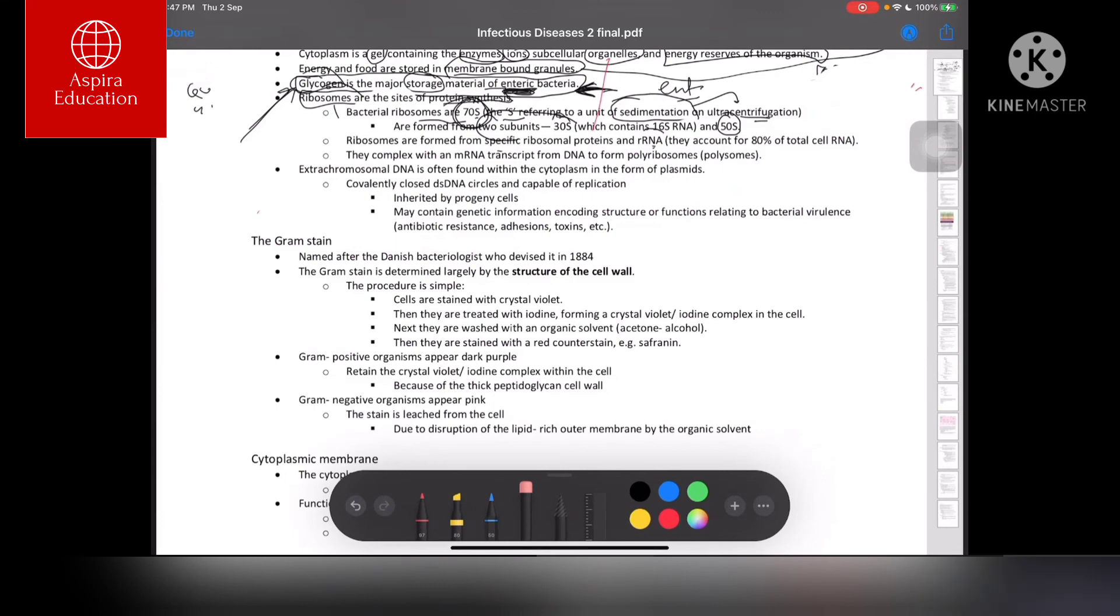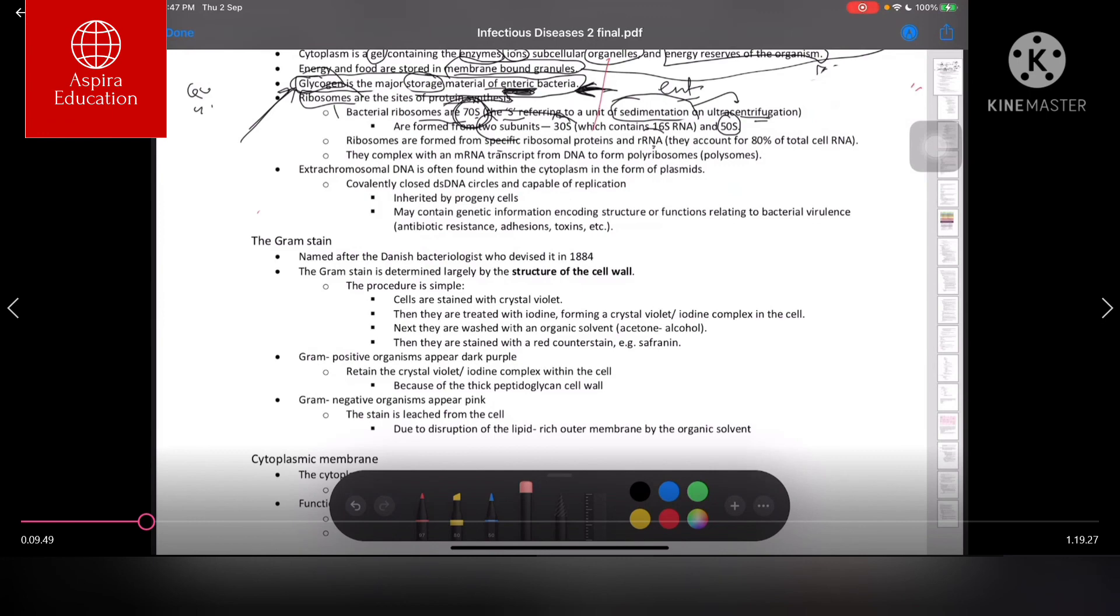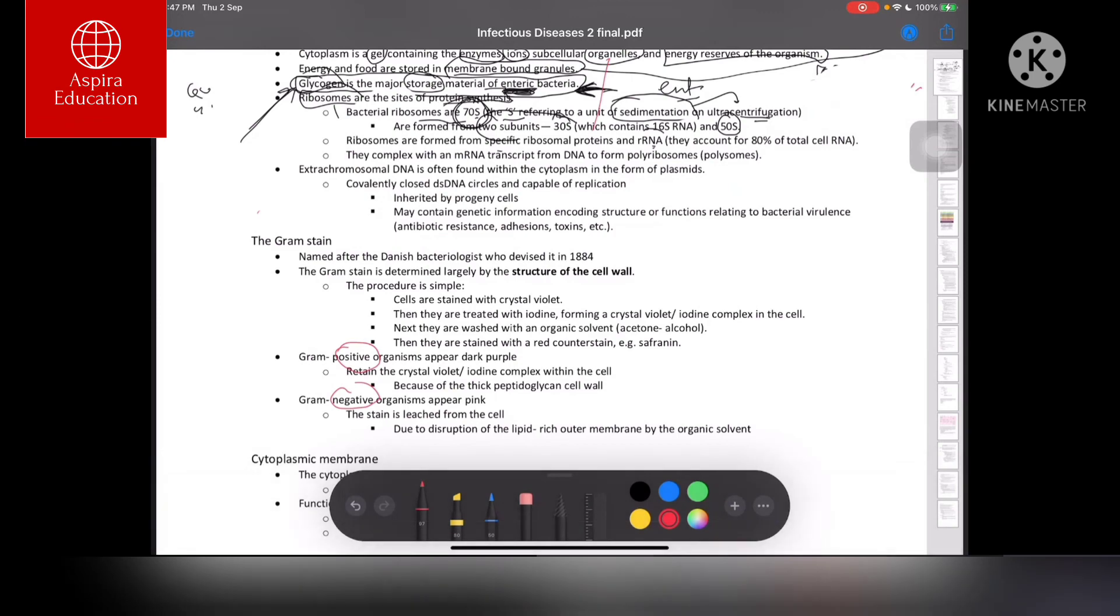There are two types: gram-positive bacteria and gram-negative bacteria. When stained with crystal violet, washed with iodine and acetone or alcohol-based solvents, and given a counter stain, they either appear dark purple or pink. If dark purple, they're gram-positive. If pink, they're gram-negative. This purple color is because of the thick peptidoglycan cell wall.